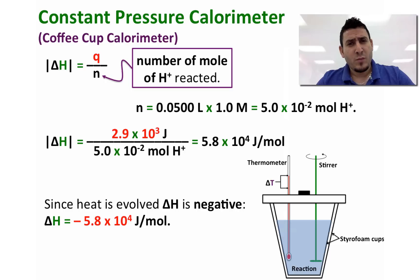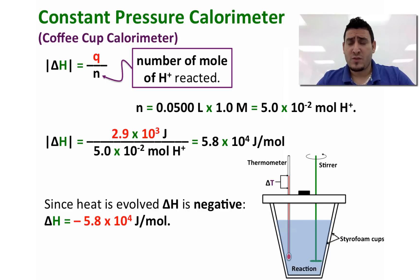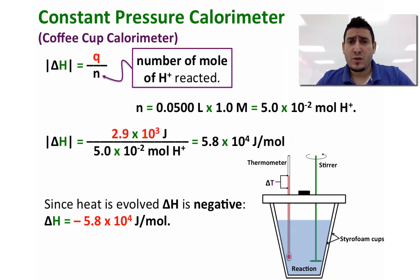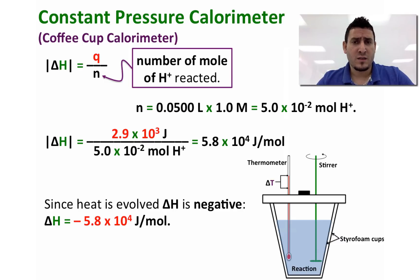An important remark about the constant pressure calorimeter: it is called constant pressure because the pressure does not change — it stays at atmospheric pressure, since we have an open system where the cover does not isolate the inside from the outside atmosphere.